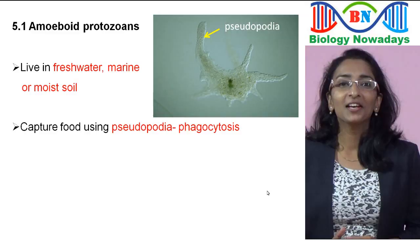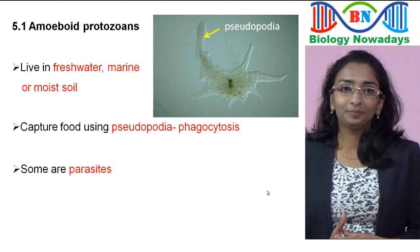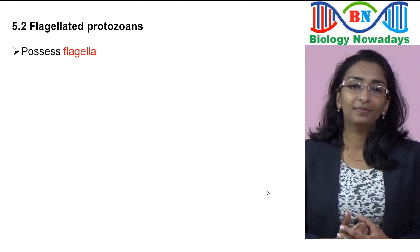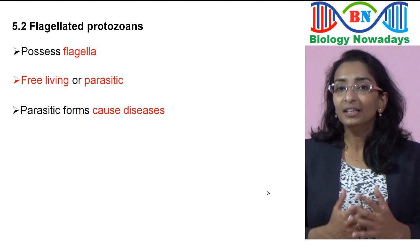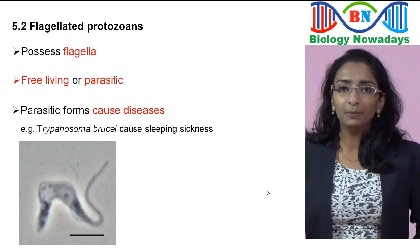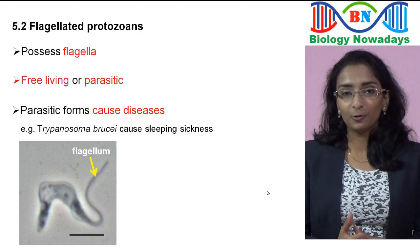Some amoeboid protozoans are parasites — for example, Entamoeba histolytica, which causes amoebic dysentery. The second group, flagellated protozoans, have flagella for movement. They are either free-living or parasitic. Parasitic forms cause diseases in humans and other animals. Trypanosoma brucei causes sleeping sickness — the name is given because in affected people the sleep cycle is disrupted. In this picture, the flagella of this protozoan can be seen clearly.